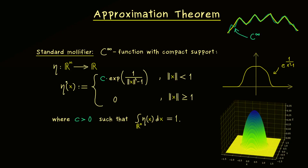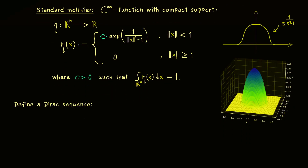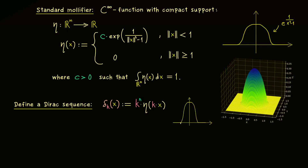We can also define a whole sequence of functions that look the same but where the domain gets smaller and smaller as the index increases. Such a sequence is called a Dirac sequence, so I call it delta with index k. This is our eta function in a scaled version: we scale the peak by k and also scale the input x by k, which means the support shrinks to radius exactly 1 over k. As k increases, the graph gets smaller in width but higher and higher.